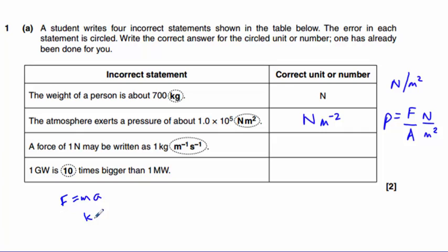Mass is measured in kilograms. Acceleration is measured in meters per second squared, m s to the minus 2. So we need to replace this m to the minus 1, s to the minus 1 with m s to the minus 2.